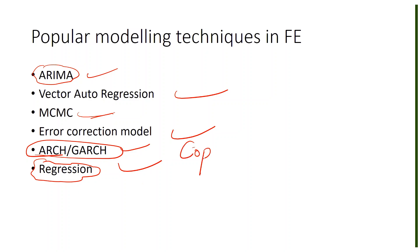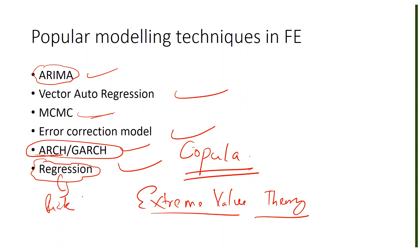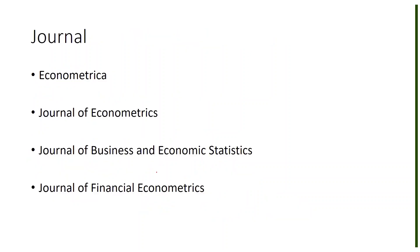Apart from those econometrics techniques, you also use techniques like copula — a form of correlation that is heavily used in financial research — and extreme value theory, which is very useful in operational risk research. Regression techniques are also heavily used in risk management, particularly credit risk management.